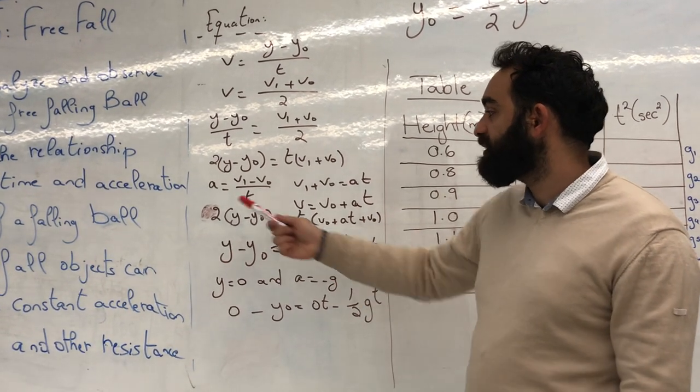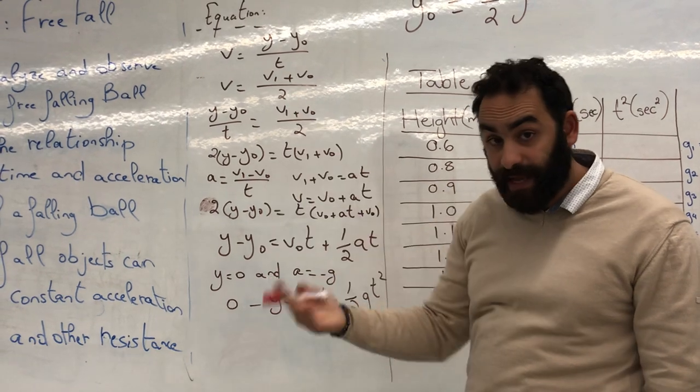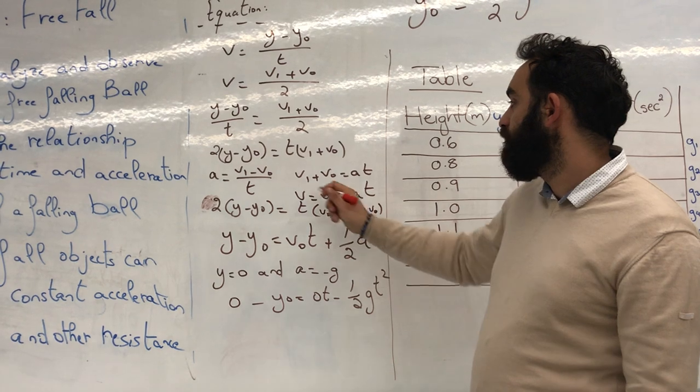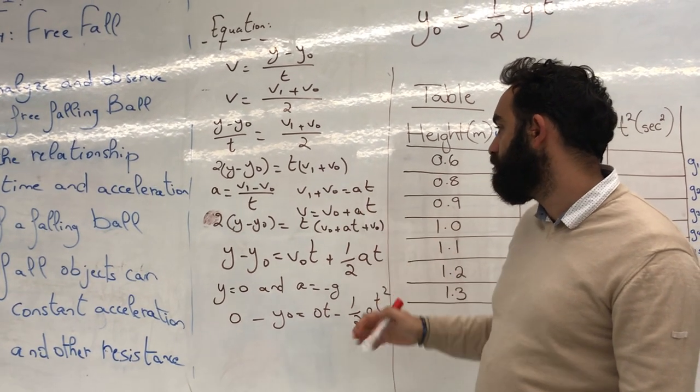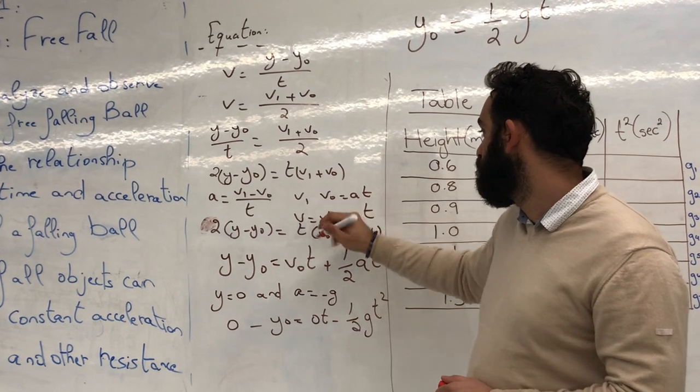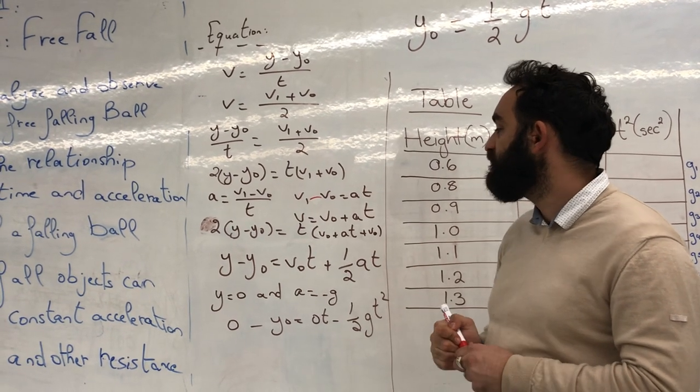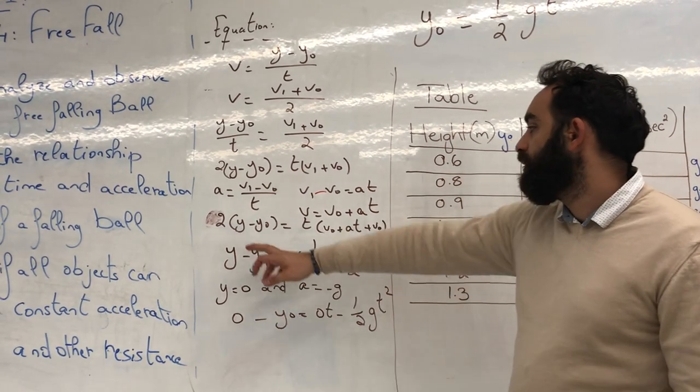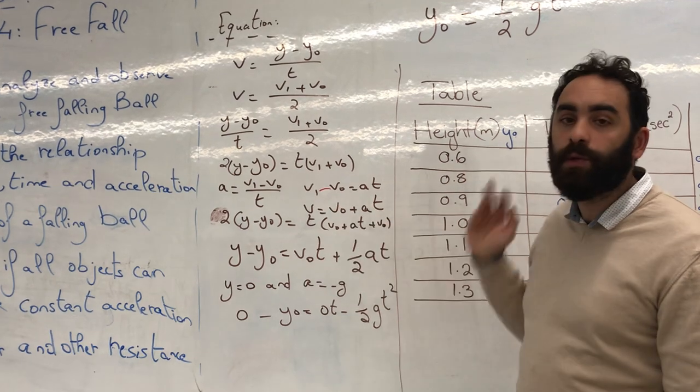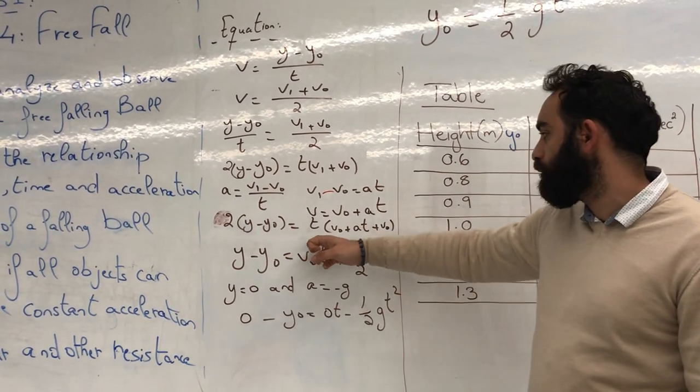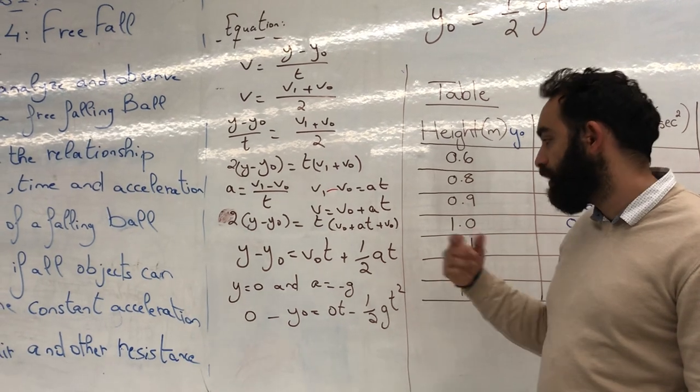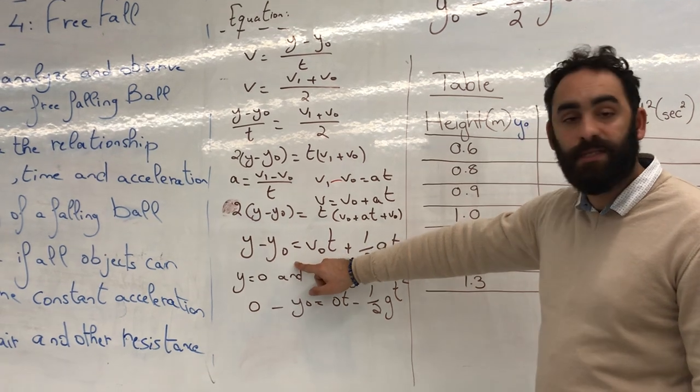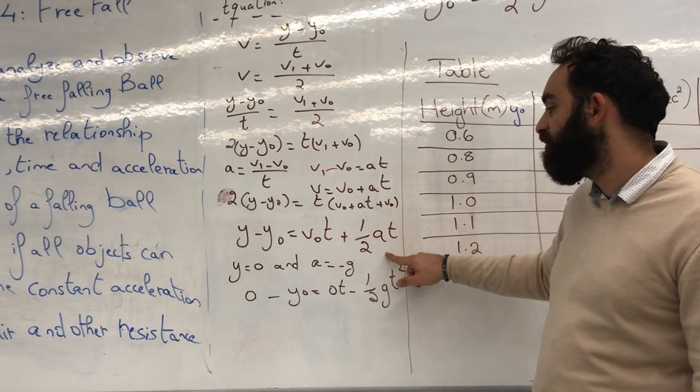As you know, acceleration is going to be, of course, the speed over time. So, it's going to be v1 minus v0, over t. v1 plus v, which gives us v1 plus v0 equals to at. Actually, here, it's going to be v1 minus v0. Sorry, v1 minus v0 is equal to at. So, v is going to be v0 plus at. Then, if we put and combine everything together, we should have the 2y minus y0 is equal to t v0 plus at plus v0. So, going on, finally, if we combine everything together, we will have that y minus y0 is going to be v0t plus half at².